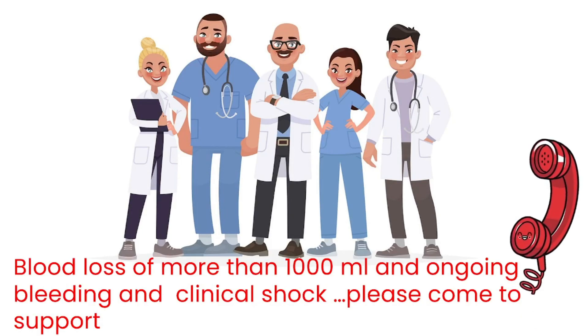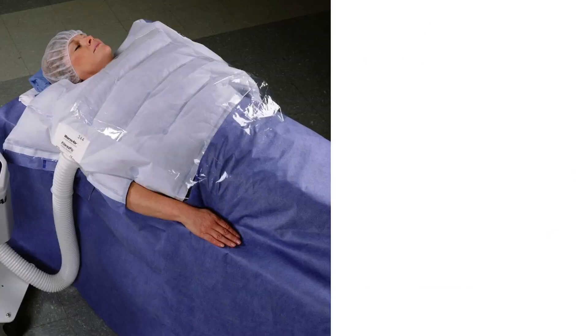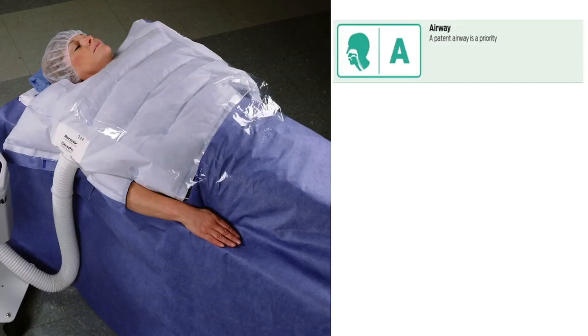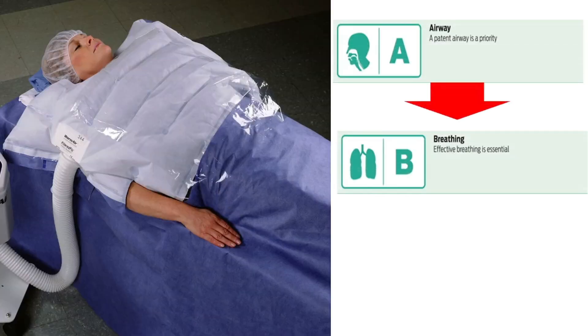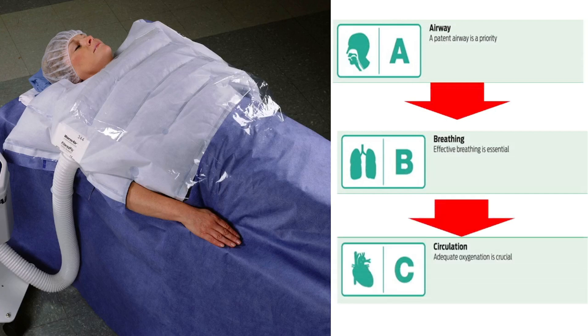Once PPH is identified, go through the ABC approach for resuscitation. Manage the airway and breathing as the first steps, position the patient flat, and keep the woman warm using appropriate available measures.